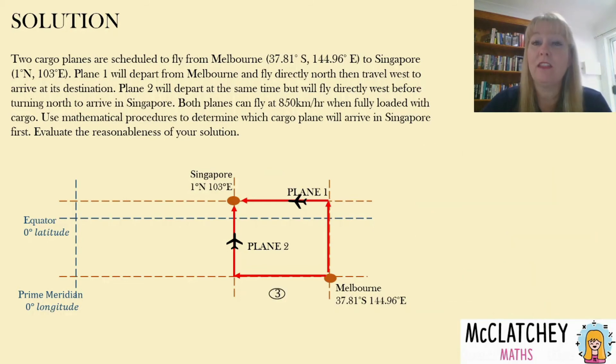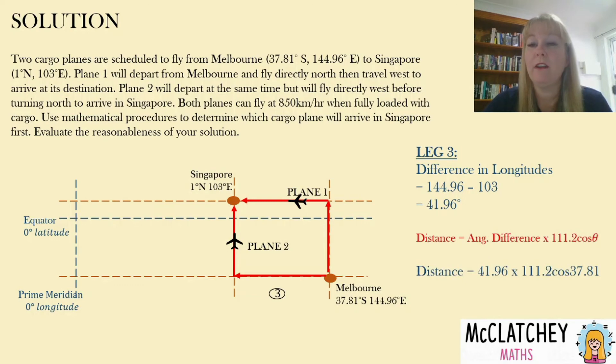We're now going to work out leg three which is the westerly direction that plane two travels between Melbourne to get to that same line of longitude that Singapore's on. So once again our difference in longitudes here is 144.96 minus 103 degrees and that gives us 41.96 degrees. So we're going to multiply that by cosine of 37.81, that's that common latitude that they have, and we end up with 3686 kilometers. See I told you so, it is shorter.